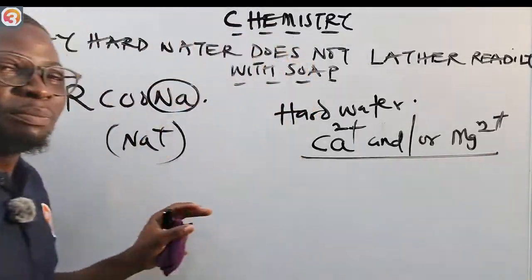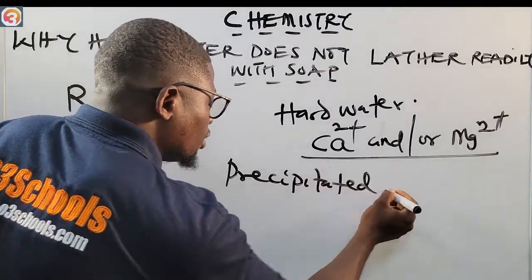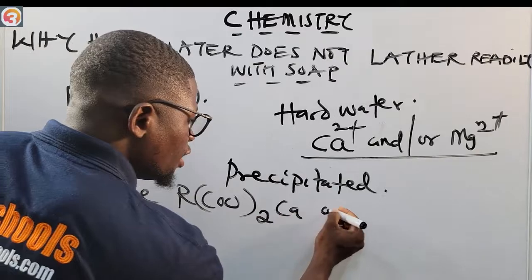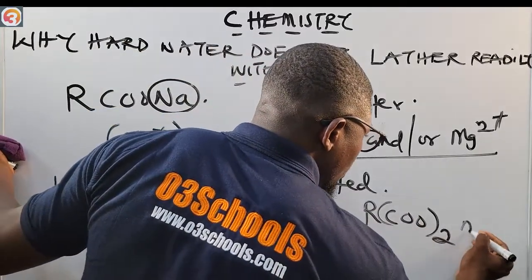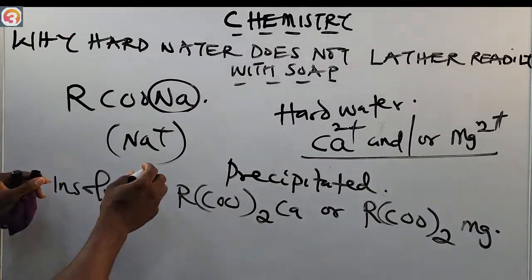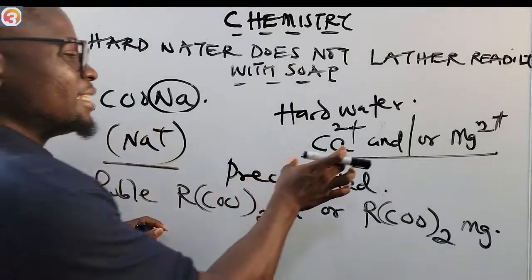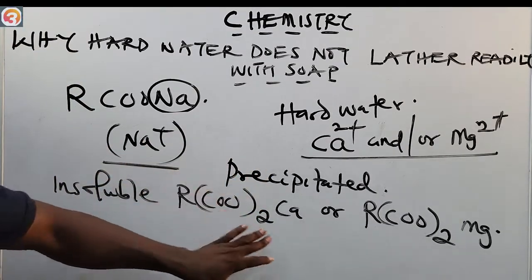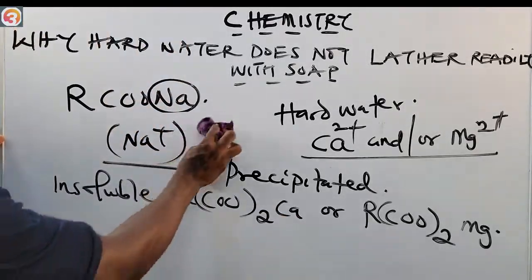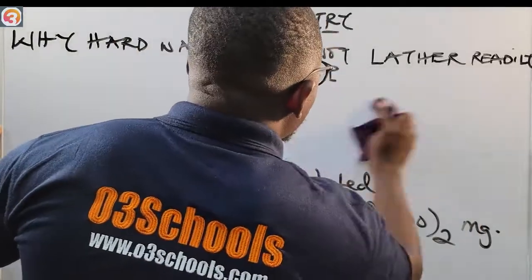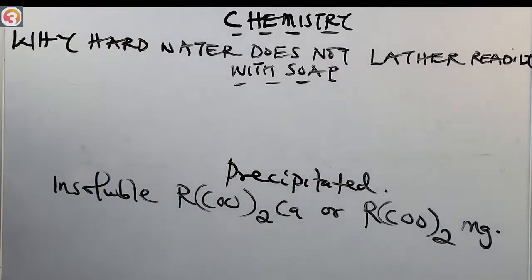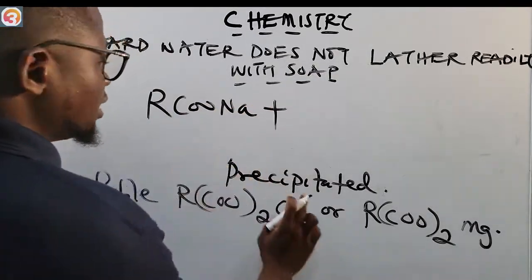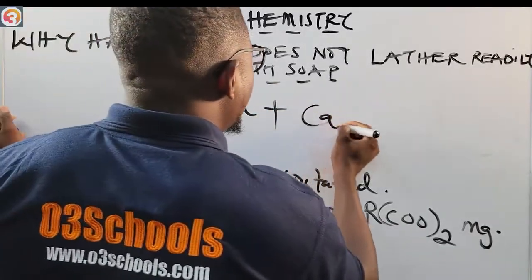The calcium and magnesium ions are precipitated as insoluble salts: (RCOO)₂Ca or (RCOO)₂Mg. So the displacement reaction that occurs: soap RCOONa plus Ca²⁺ in solution gives (RCOO)₂Ca precipitate plus Na⁺ ions. The calcium is displaced from the solution.